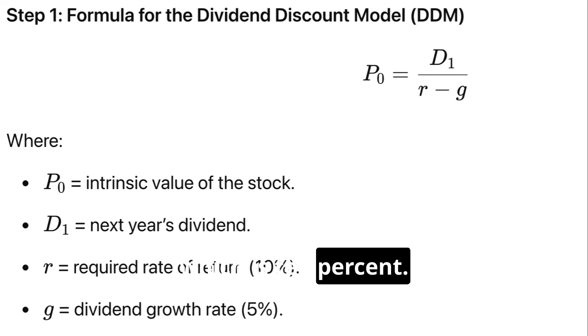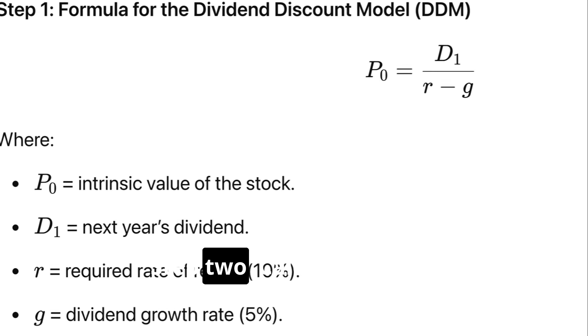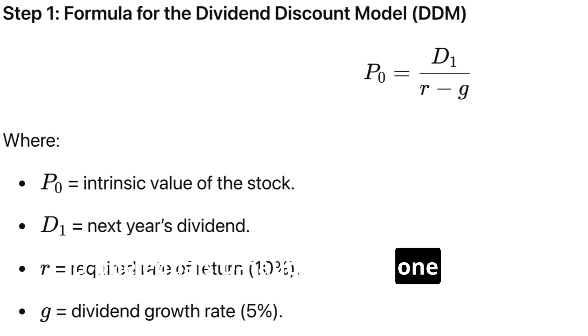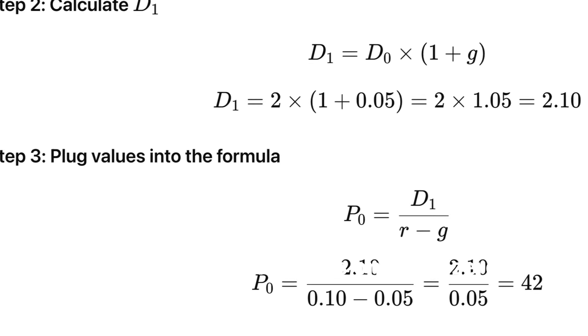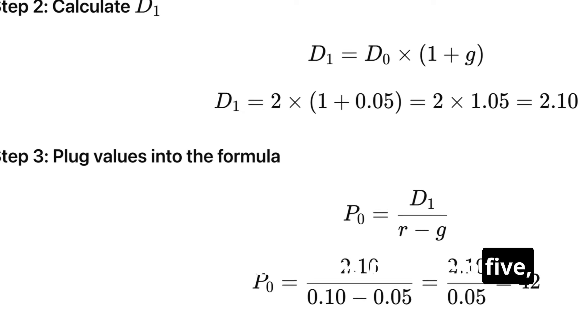Step 2: Calculate D₁. D₁ = D₀ × (1 + g). D₁ = 2 × (1 + 0.05) = 2 × 1.05 = 2.10.